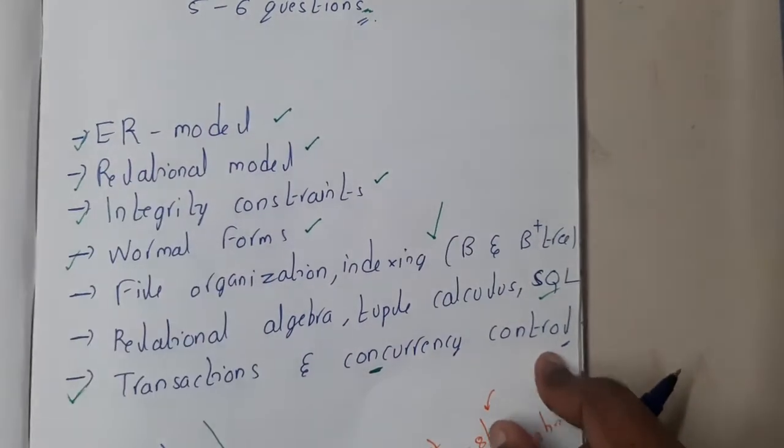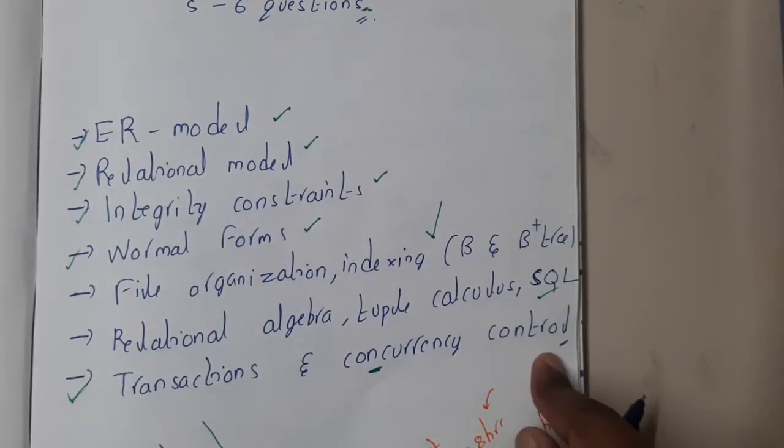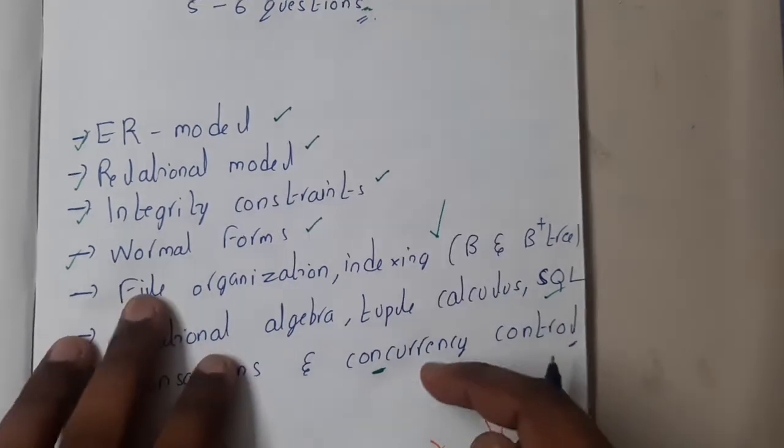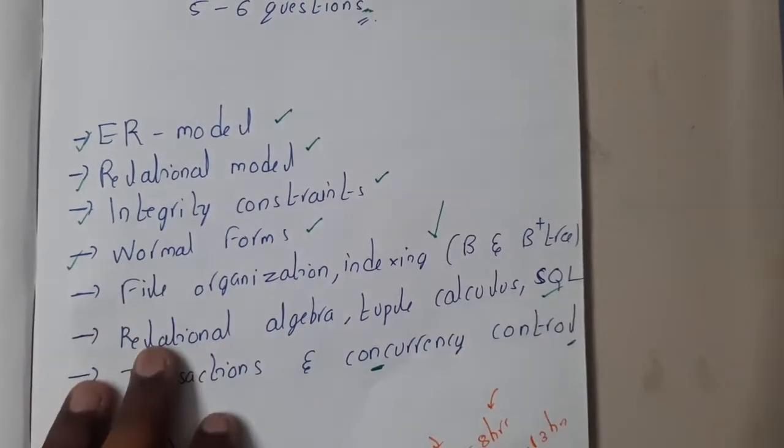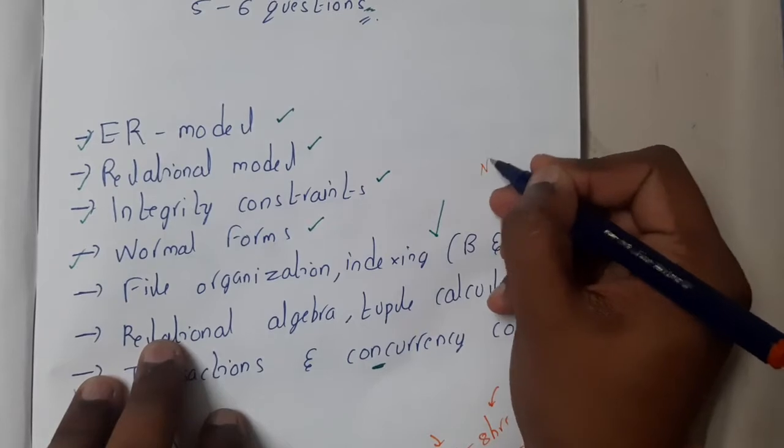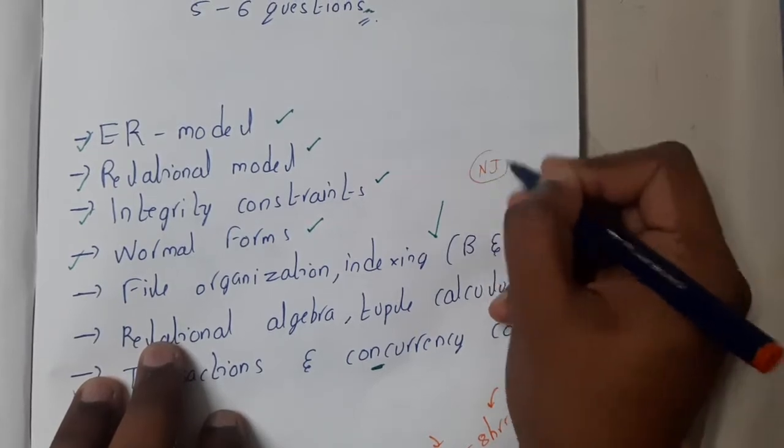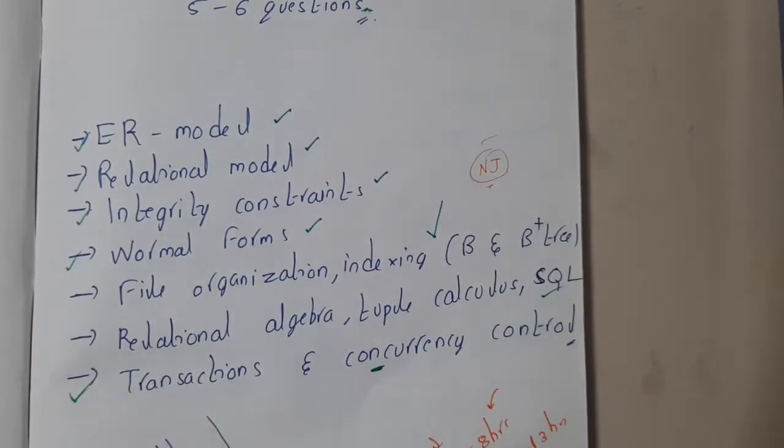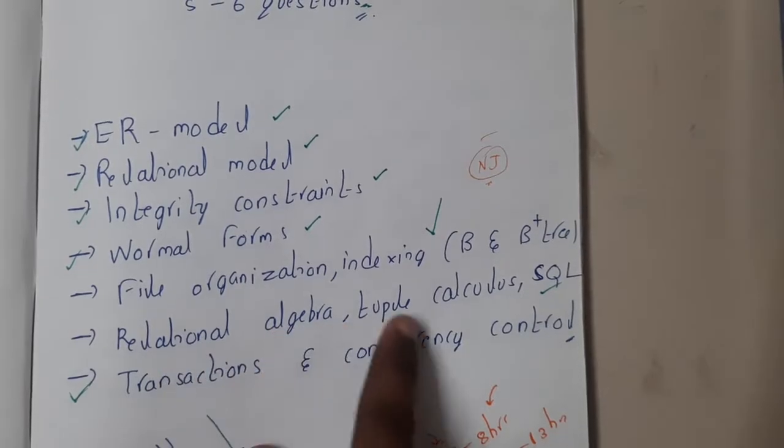When it comes to relational model and ER model, you will get questions like how many tables are needed if it is one-to-M relation. For SQL, please practice the queries and be clear, be perfect with natural join and other queries. Please practice relational algebra and tuple calculus also.